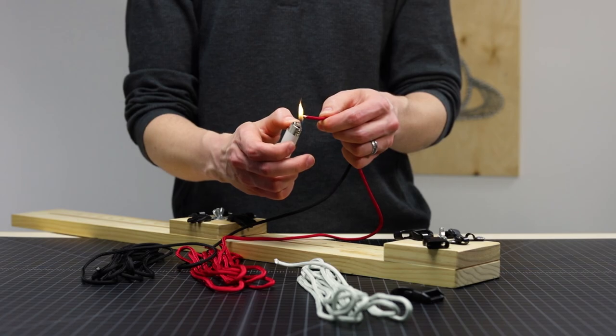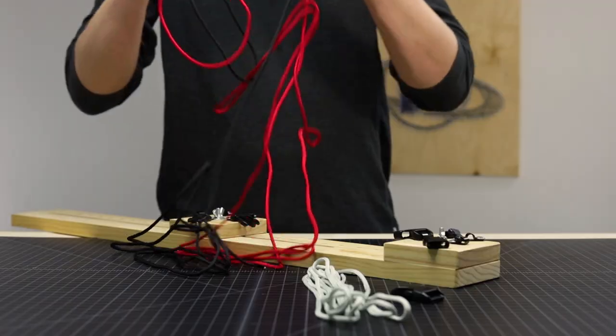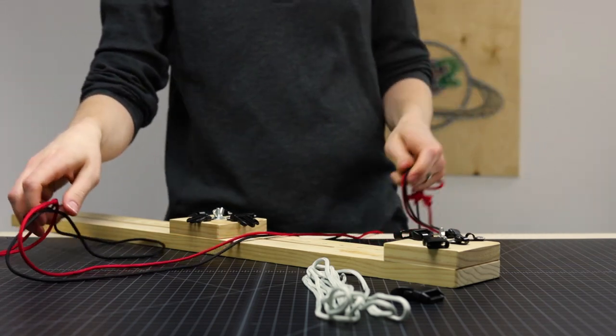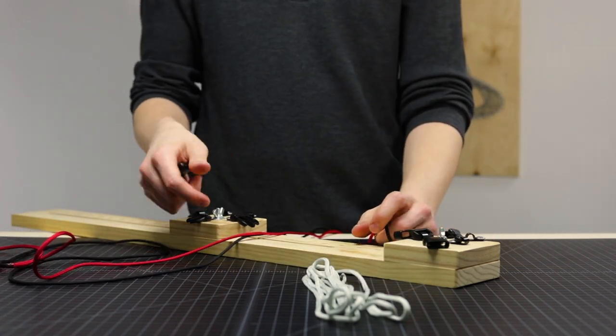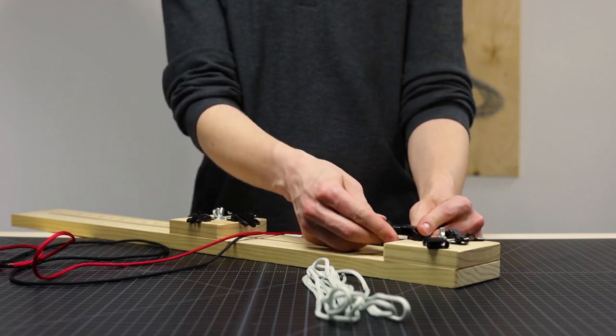Go ahead and melt the ends and press those together and hold. And then we're going to set up our jig. So I've got mine set up with a three-quarter inch buckle on each end here. So I'm going to snap a new buckle into that.